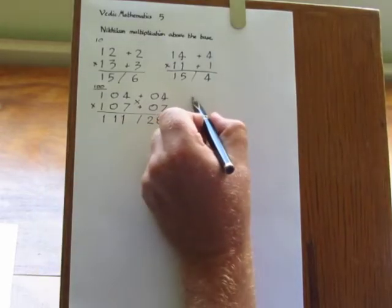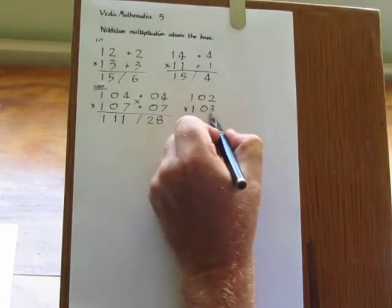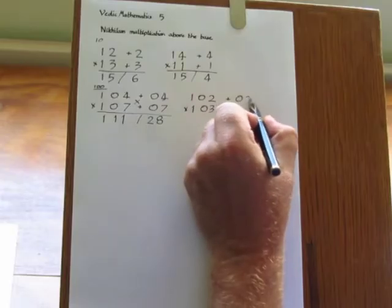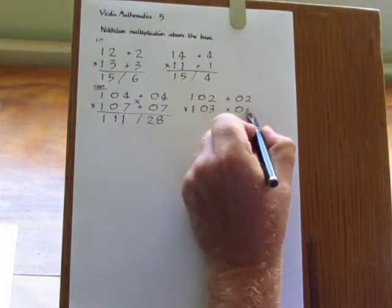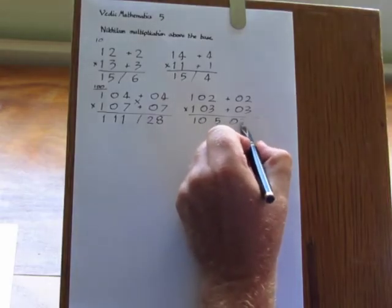Here's another example: 102 times 103. And this method is so very simple that you can do it mentally. And we get 105, 06.